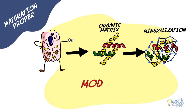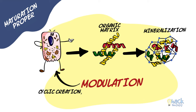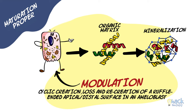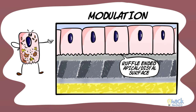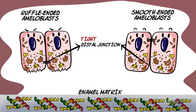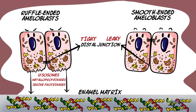Modulation is a process of cyclic creation, loss, and re-creation of an invaginated ruffle-ended apical surface. That is, ameloblasts cyclically alternate between having a ruffle-ended border and a smooth-ended border at the apical surface facing the enamel matrix. A ruffle-ended ameloblast possesses a tight distal junction, whereas smooth-ended ameloblasts possess leaky junctions. Ruffle-ended ameloblasts contain enzymes such as lysosomes, metalloproteinases, and serine proteinases, which are secreted via their ruffle-ended borders to degrade in bulk the proteins in the enamel matrix.